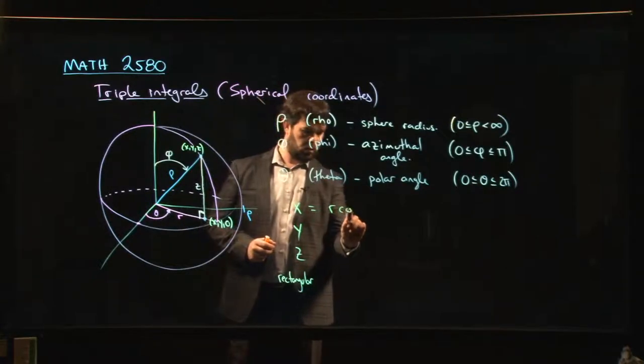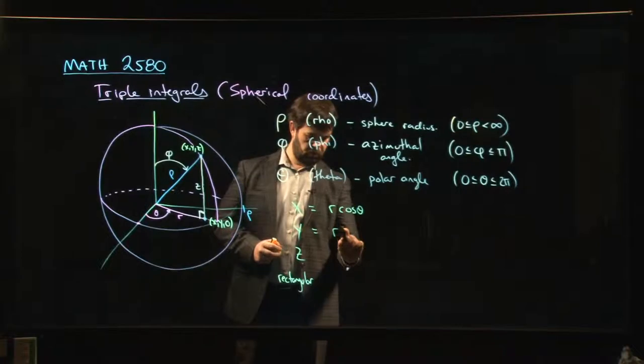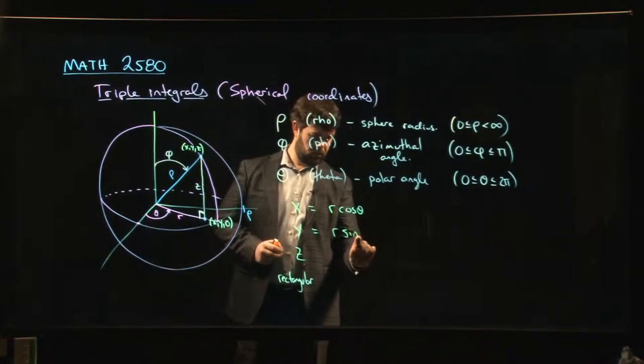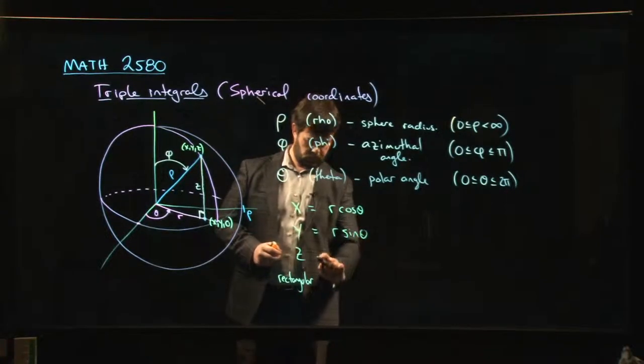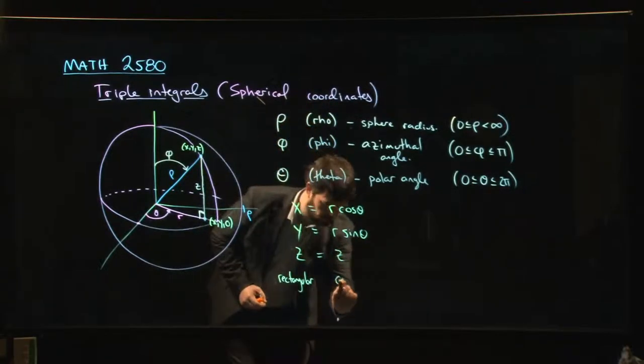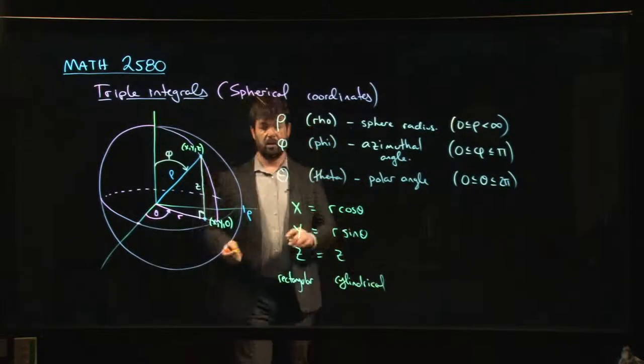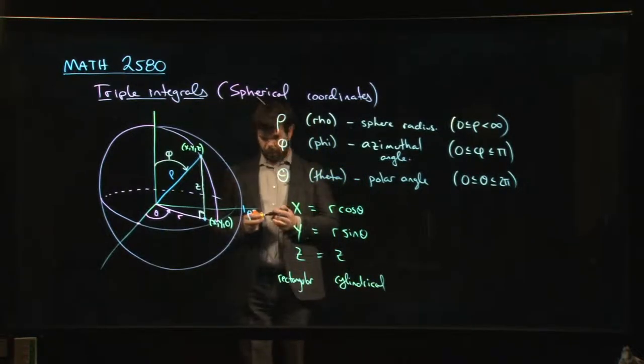So, x should be r cos theta, y should be r sine theta, z remains z. Now, we're using cylindrical coordinates.